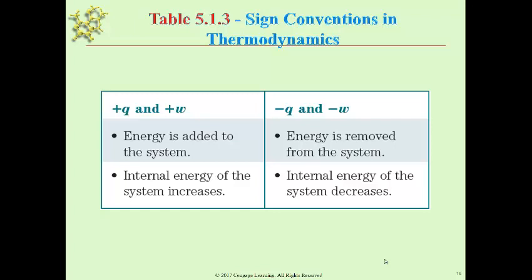So a positive Q would mean that heat, not temperature necessarily, but heat is being added to your system from the surroundings. And a positive W is that work is being done on the system by the surroundings. As a result, the internal energy of the system is increasing.